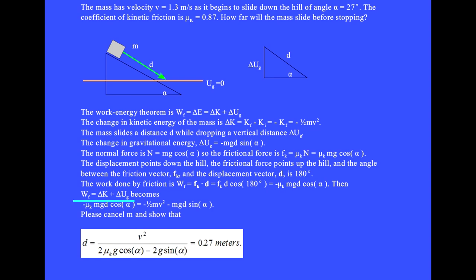The work-energy theorem then becomes minus mu k mgd cosine alpha equals minus one half mv squared minus mgd sine alpha. Cancel m and the result is d equals 0.27 meters.